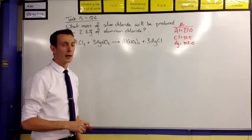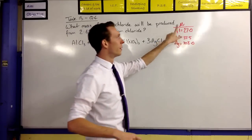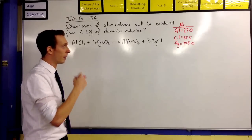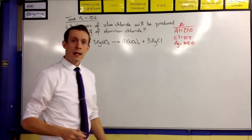We're given the balanced equation for this as well. And we're also given the molecular masses, so the relative atomic masses for aluminium, chlorine and silver because they're the important ones.